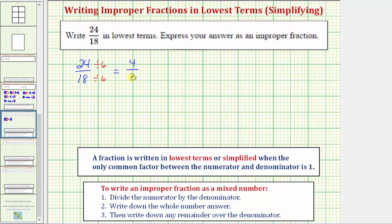Notice the only common factor between four and three is one and therefore we now have the fraction in lowest terms.